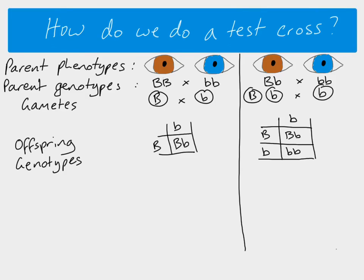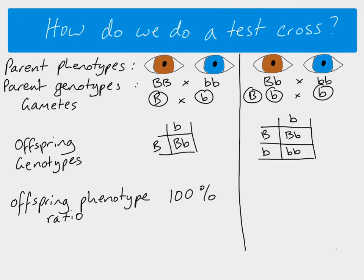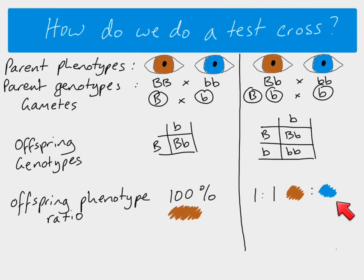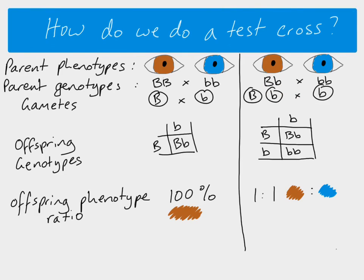In reality we look at offspring phenotypes rather than genotypes, since that's what we can observe. If the parent had the homozygous dominant genotype, all offspring would have brown eyes. But if you do the cross and find approximately 50% of offspring show the recessive phenotype — blue eyes — the only way that can happen is if the parent had the recessive allele. So when you see the recessive phenotype in the offspring, that tells you the original parent must have been heterozygous. That is a test cross.